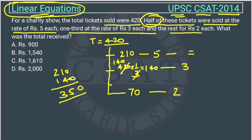So from here the money will be how much? We will multiply 210 into 5, that will be the total amount of money.